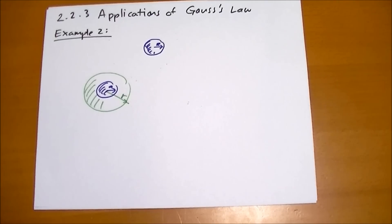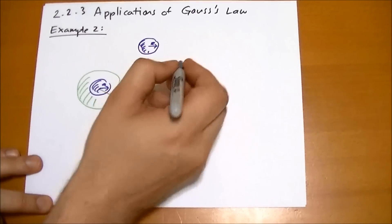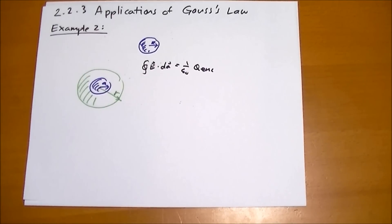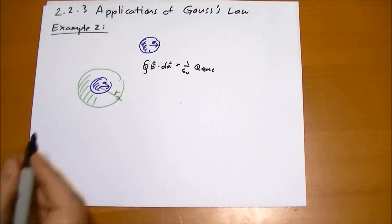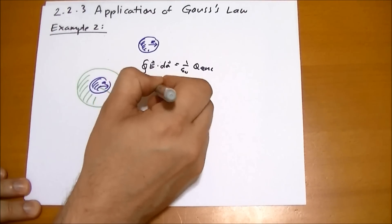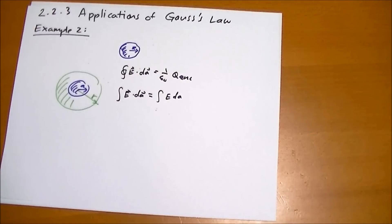And Gauss's Law states, rather unequivocally, that the flux of that surface — E dot dA — is going to equal 1 over epsilon naught times the total charge enclosed. What does that mean in this case? Well, the total charge enclosed is just the total charge of that sphere, Q. And thanks to symmetry — thanks to the fact that the electric field has to be pointing in the same direction at every point along that sphere — we can say that the surface integral of E vector dot dA vector equals the integral of the magnitude of E times the magnitude of dA, so we can just drop the vector notation.